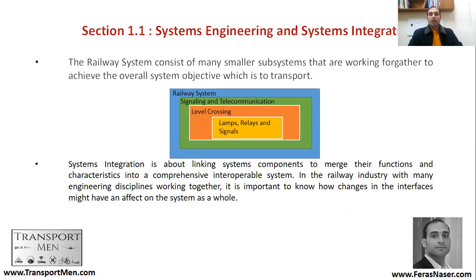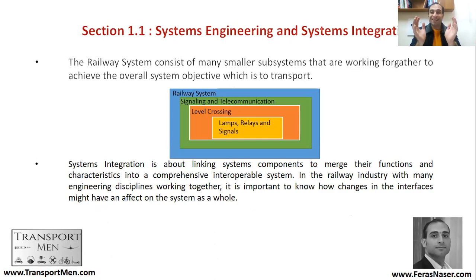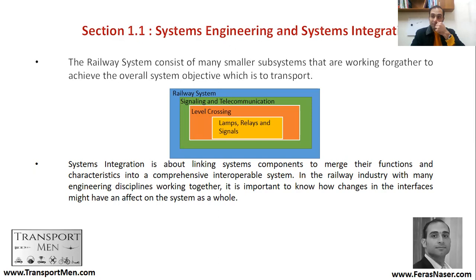ما هو مثال على Systems Engineering و Systems Integration؟ الأنظمة قد تكون متكونة من أنظمة أصغر منها، ما يسمى System و Sub-System. السب-سيستم هو نظام يكون جزءاً من نظام أكبر منه. إذا نظرنا إلى Railway Systems كنظام النقل السككي الكبير، فقد يتكون جزء منه من نظام الـ Signaling System، والـ Signaling System قد يكون فيه ما يسمى بالـ Level Crossing، وفيه الإشارات. كل هذه الأجزاء هي أنظمة، ولكنها نظام جزء من نظام جزء من نظام أكبر، وهنا تبدأ عملية التعقيد.